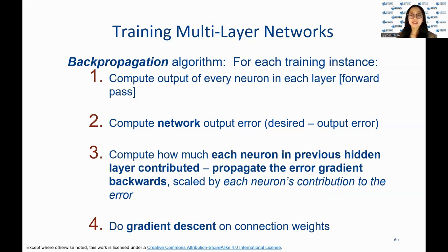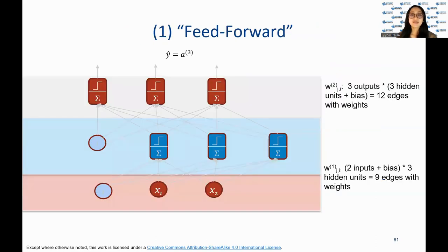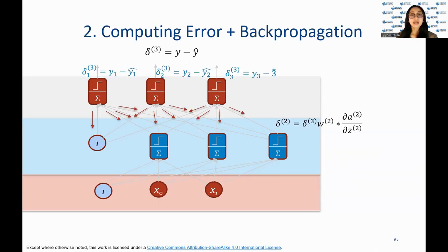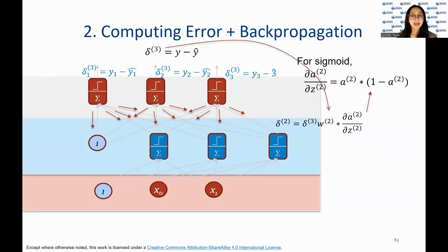In step four, we perform gradient descent on the connection weights to update them. This slide shows the weights and edges of a neural network with three outputs and three hidden units along with a bias, resulting in 12 edges with weights. This slide explains the process of computing the error and backpropagation in a neural network. For this sigmoid function, it shows the formula for computing the derivative of the output of the second layer with respect to its input, highlighted on the right-hand side.